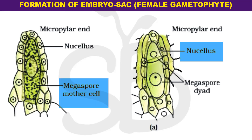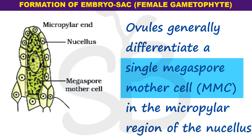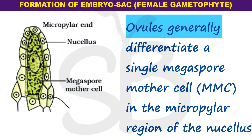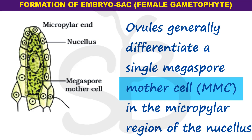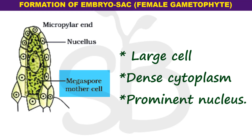This is a mega spore mother cell. The ovules generally differentiate a single megaspore mother cell, located in the micropylar region of the nucellus. This is a mega spore mother cell.